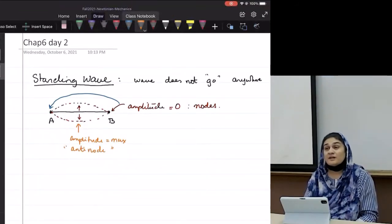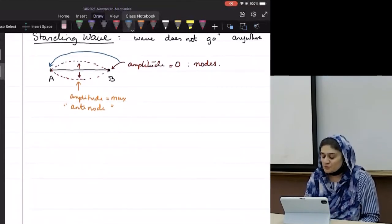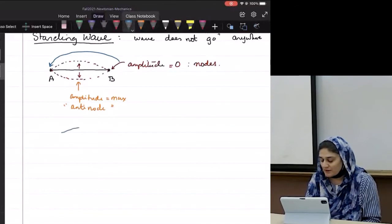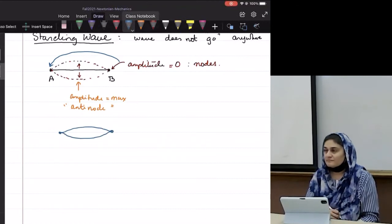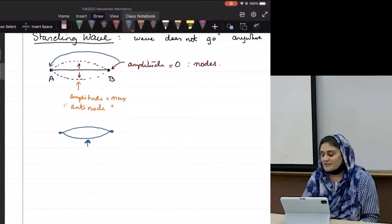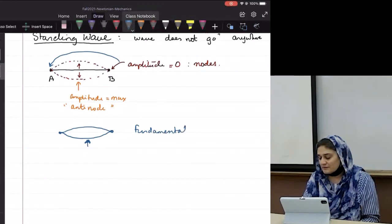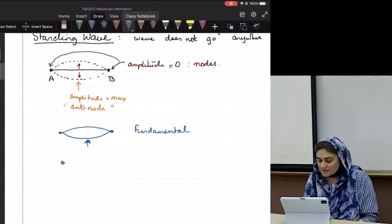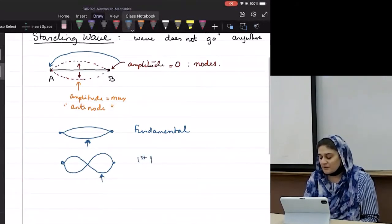So we can set up different kinds of standing waves in a string. The first one we set up is when we pluck the string from the middle, right? When the string is being plucked here. This is called the fundamental. We can also set up the string where we pluck it here. This is called the first harmonic.